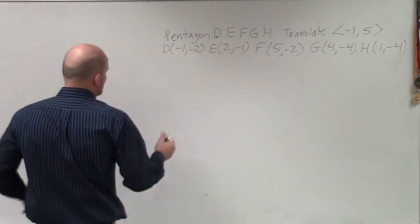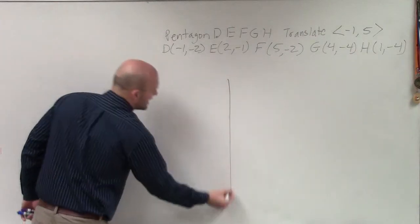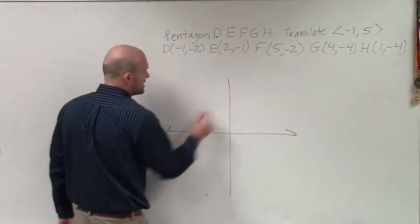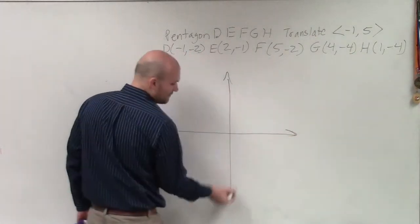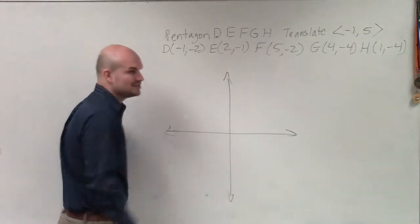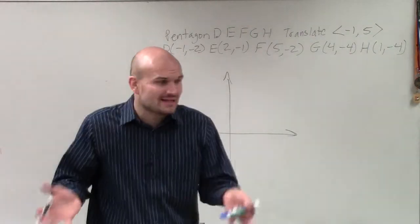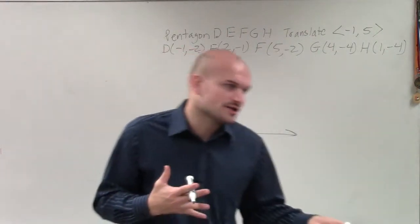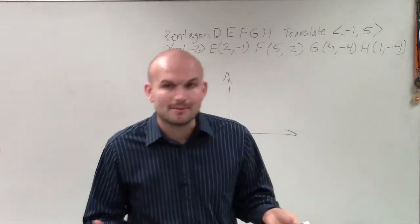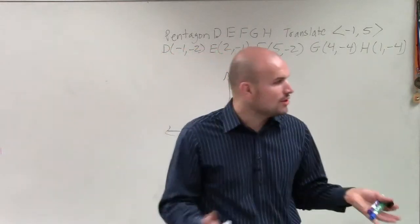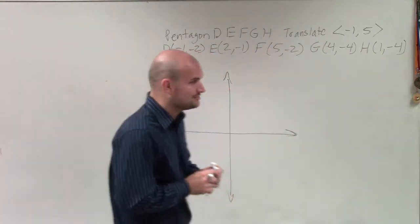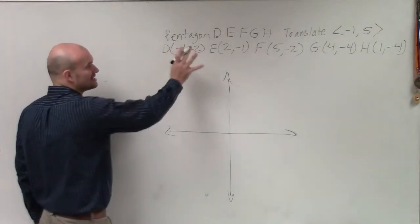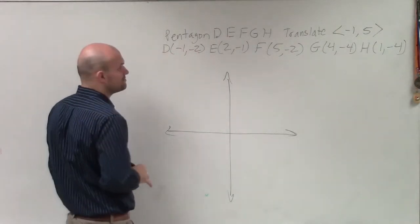So the first thing I'm going to want to do is let's go ahead and plot these points. And guys, if you get stuck with any one of our transformations, at least just plot the points and let's label them, right? It's going to be very hard to do any of these problems if we don't have these points correctly labeled. So the first thing I'm going to do is let's plot each one of these points.